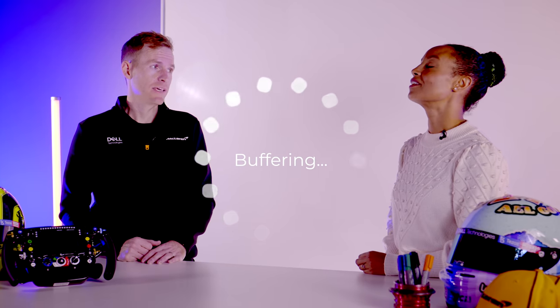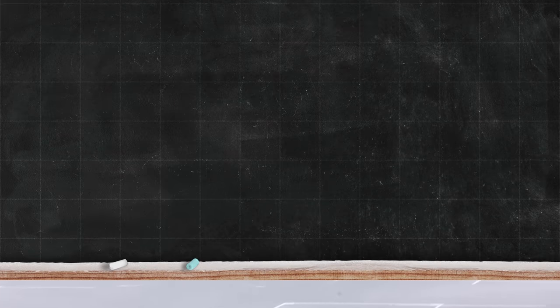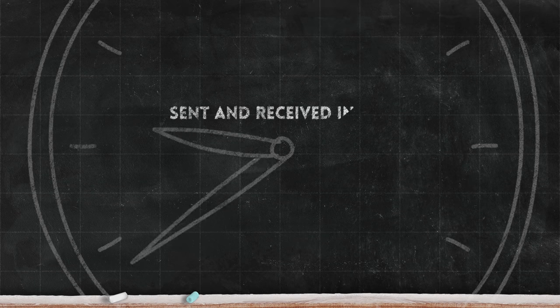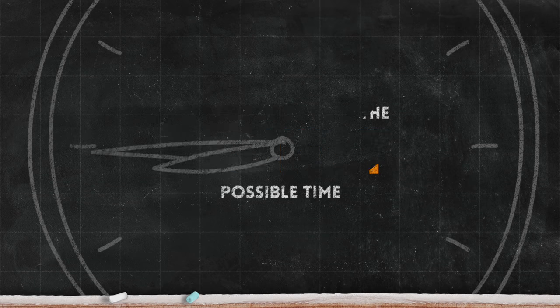The internet does throw up the occasional glitch. Sometimes there can be delays in sending or receiving information, which can be really annoying when you're playing online games. Oh yes, the dreaded buffering — and that's the last thing you want during a Grand Prix. Speed is of the essence, not just at the track but in your network. A race team needs information to be sent and received in the fastest possible time. It could make the difference between winning and losing. So what kind of information gets transferred over a race weekend?